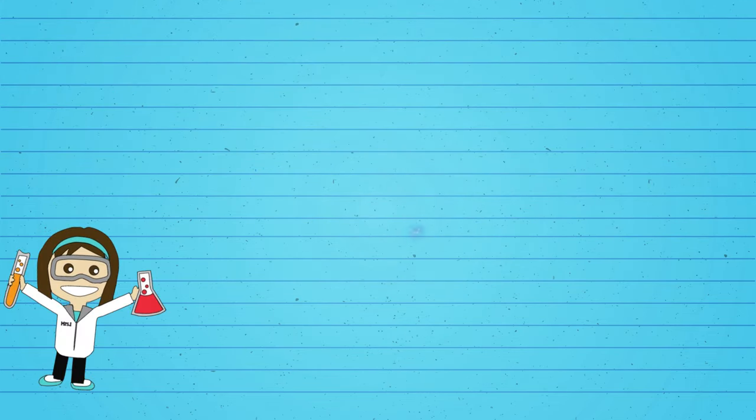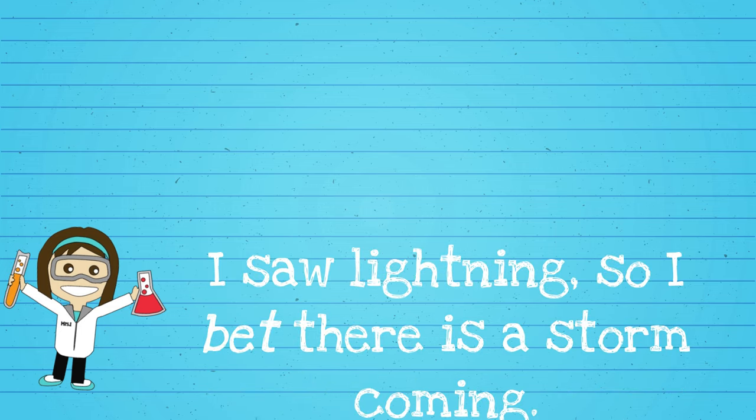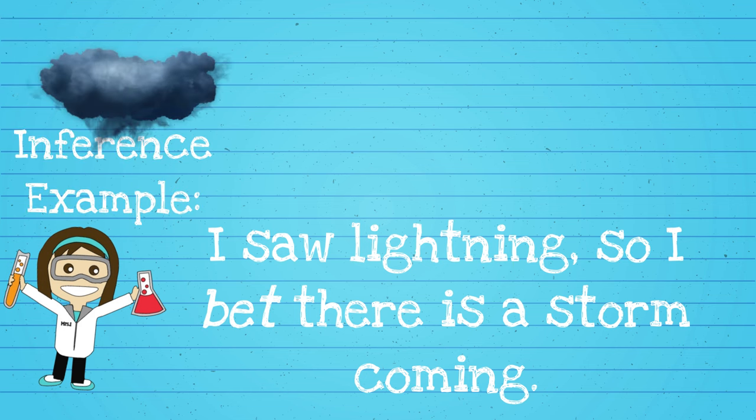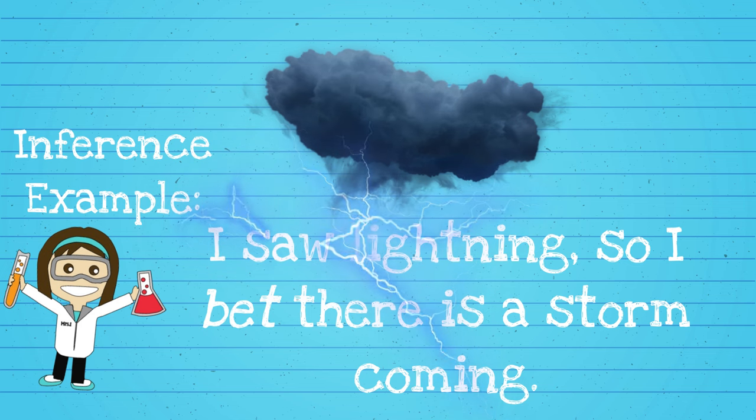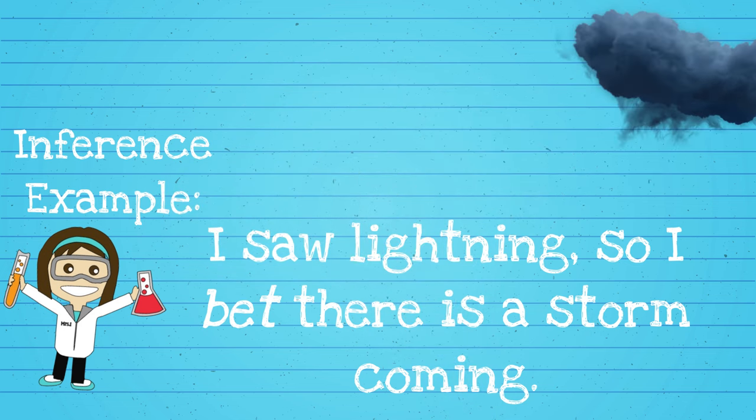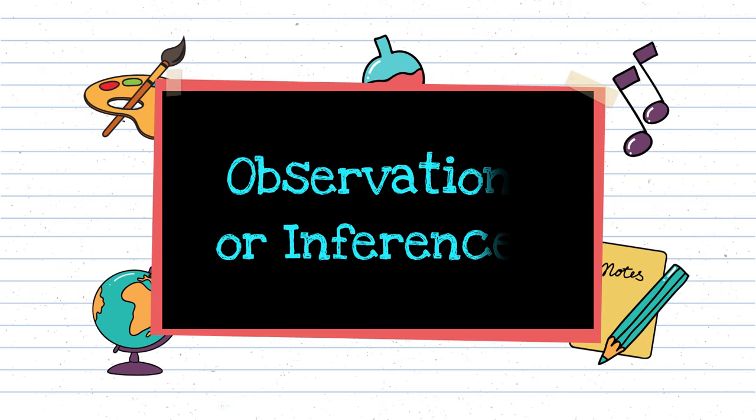Remember the lightning we saw in our observation example? What do you think it can mean when there is lightning? If you guess that there may be a storm coming, then that is an inference. You used an observation of seeing the lightning and put that together with your knowledge of storms to make a guess about what was going to happen this time.